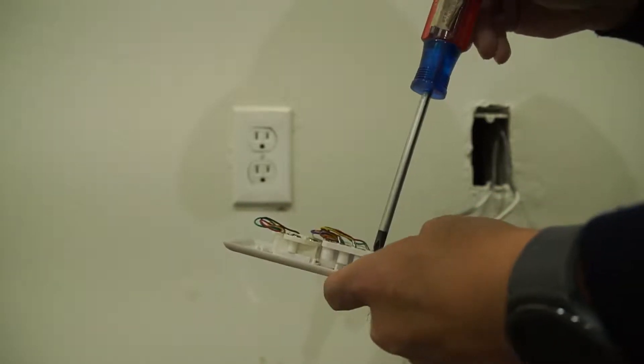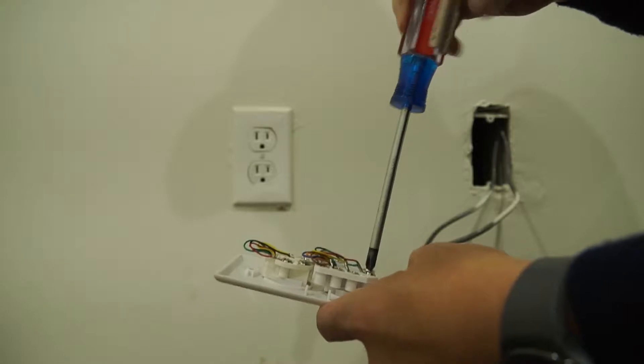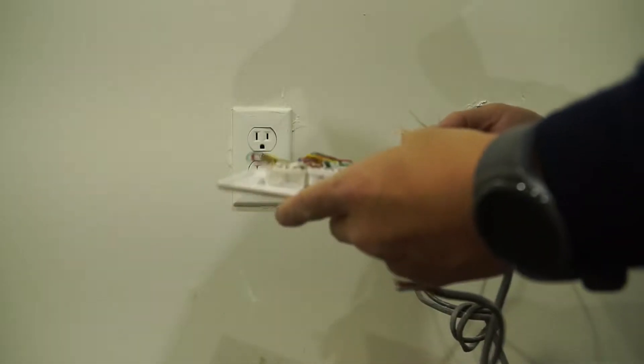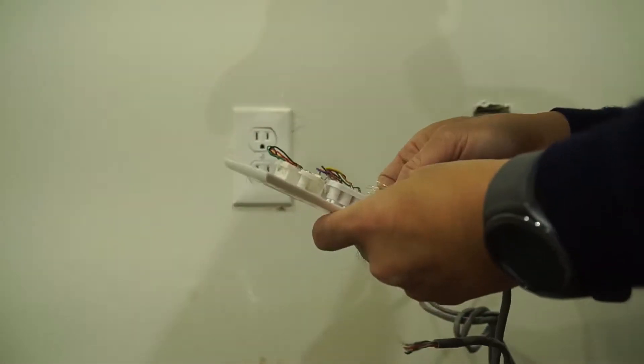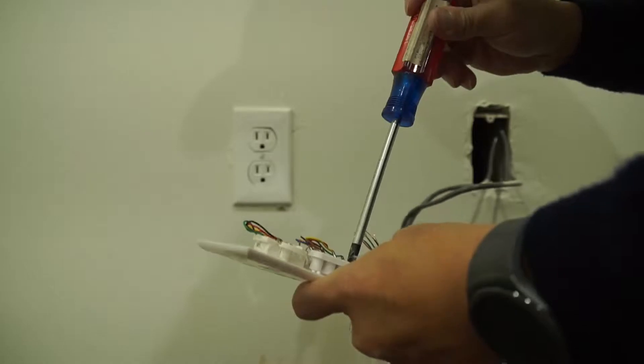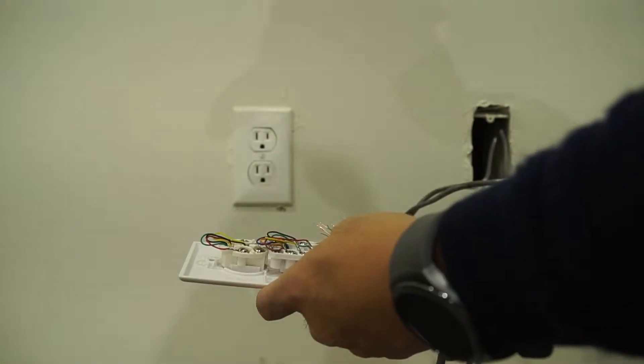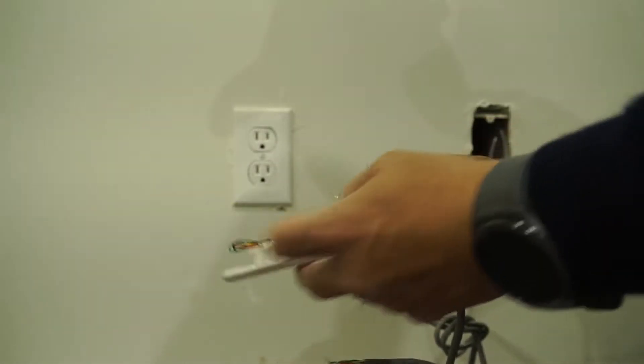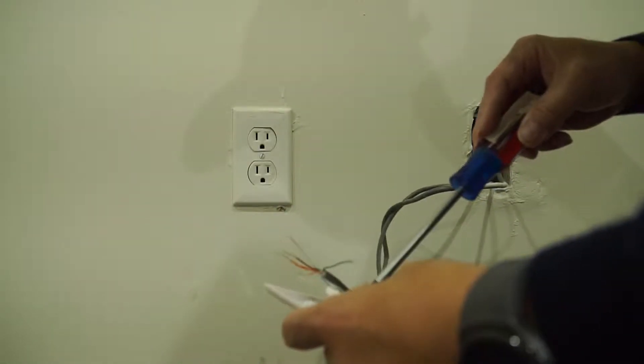So what it looks like is this two here is going to be my blue and blue white, and green is going to be here.